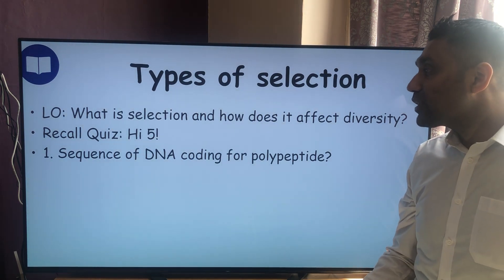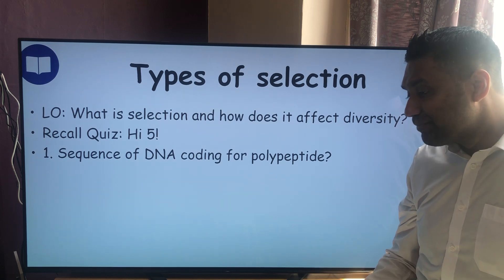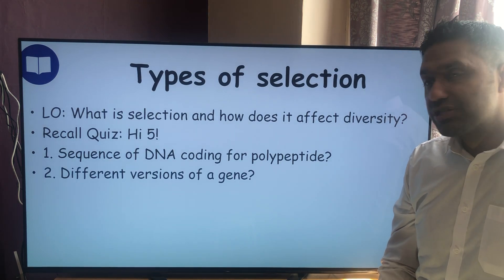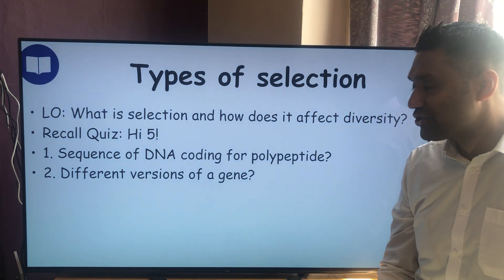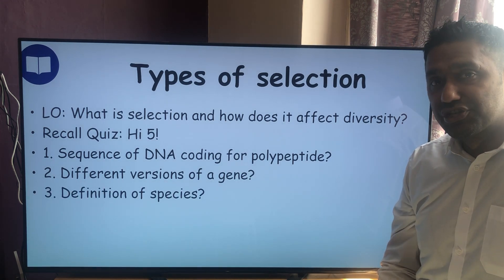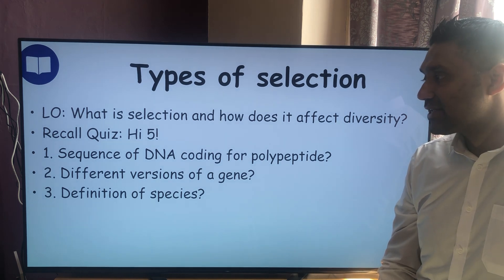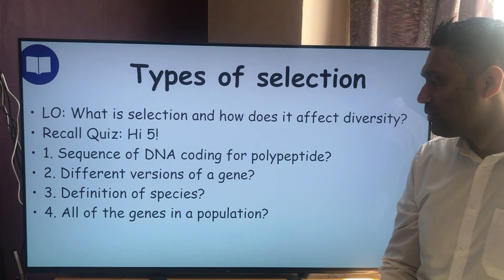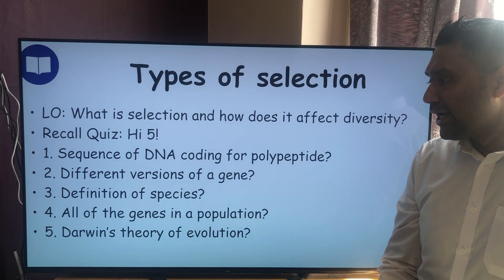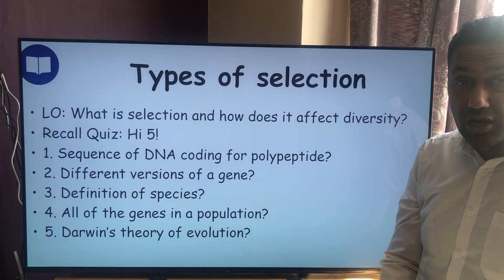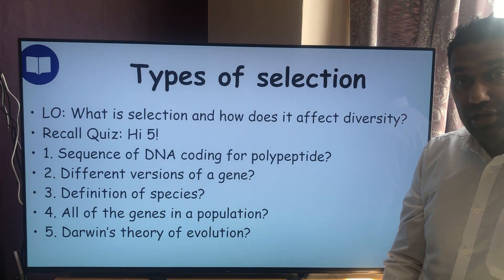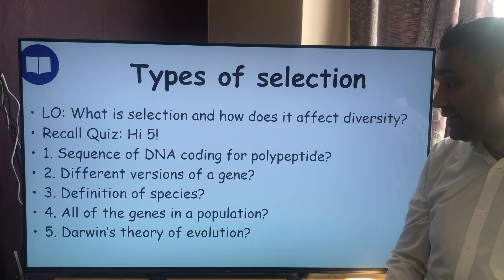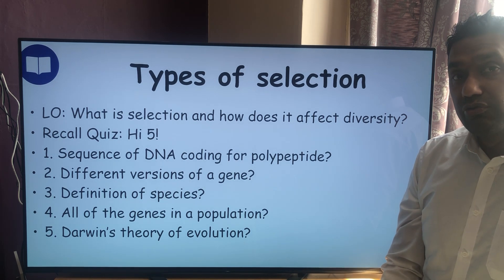Number one: what is the word we use for a sequence of DNA that's coding for a polypeptide? Number two: different versions of a gene — what's the word? Number three: what is the definition of a species? Number four: what do we call all of the genes in a population? And number five — this one isn't a one-word answer — can you write down Darwin's theory of evolution in bullet points?